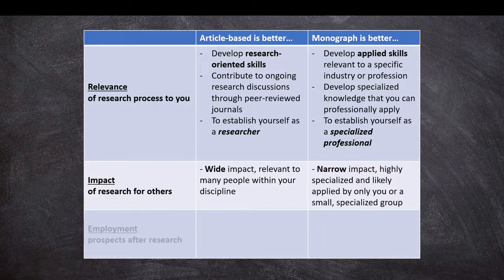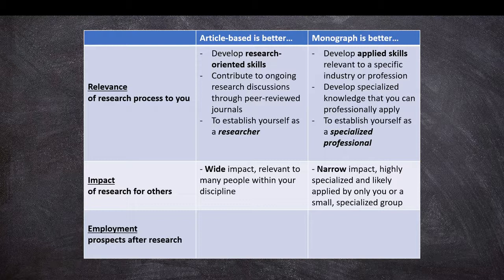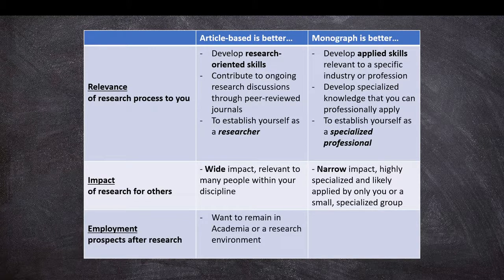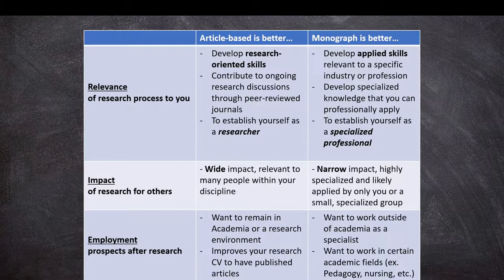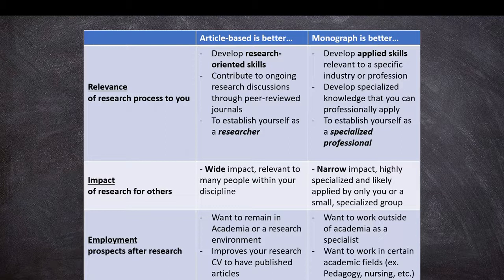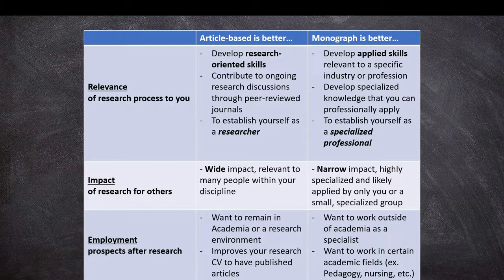And then of course we need to consider the employment prospects after researching. The article-based PhD is much better if you want to remain in academia or a research environment, mostly because it improves your research CV to have published articles, but a monograph is beneficial mostly if you want to work outside of academia as a specialist, or if you want to work within certain academic fields, for example, pedagogy or nursing, which do a combination of applied skills, applied knowledge in a very specialized field. Monographs can allow you more time to develop those necessary applied skills while conducting your research.